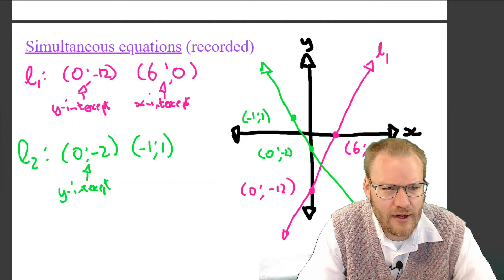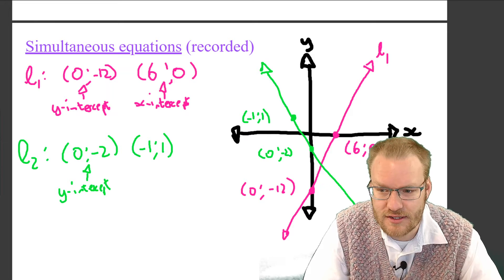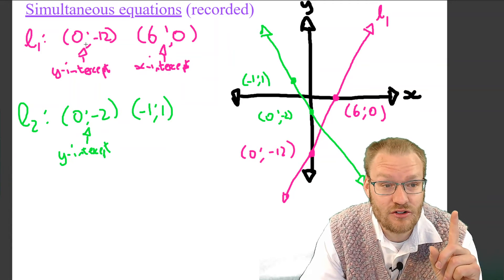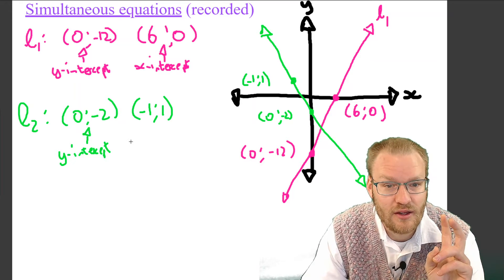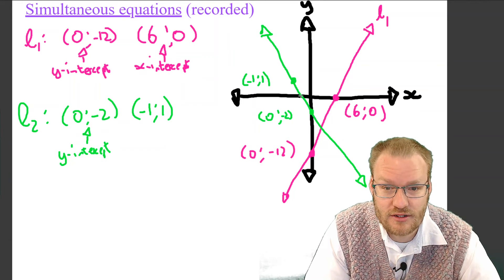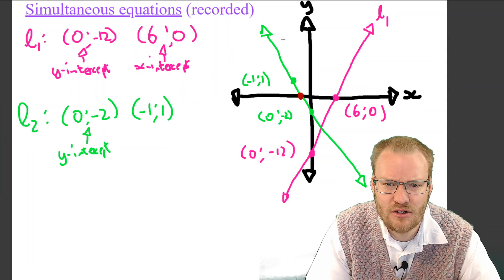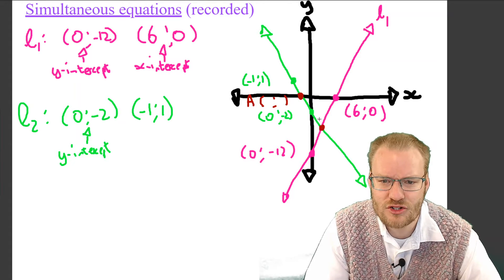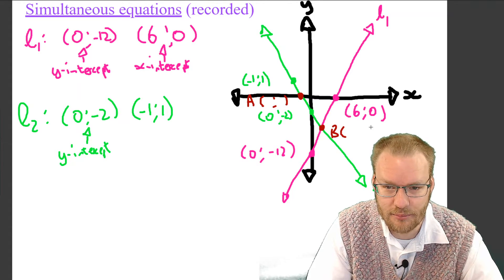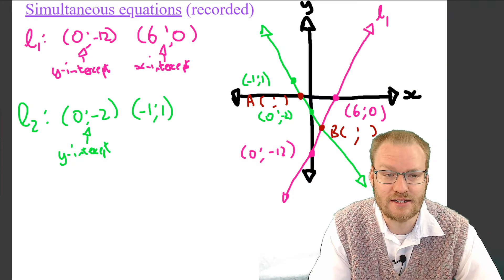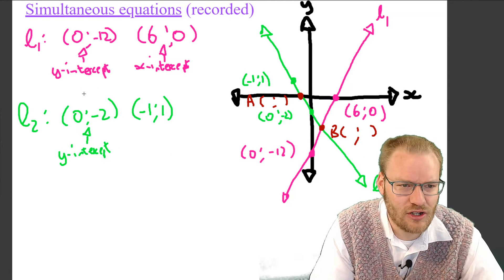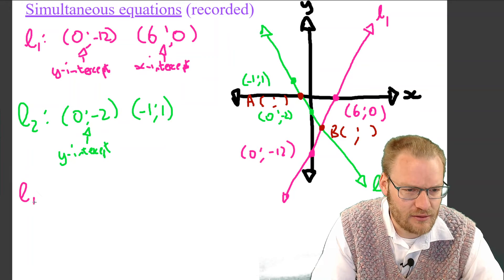We're going to do a few things now. First, find the equation of line one and line two. Then determine point A, which is the x-intercept of line two. And then find point B, where the two lines are equal to each other — that's what simultaneous equations are. So we're working our way towards finding point B.